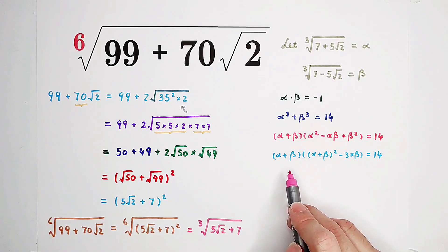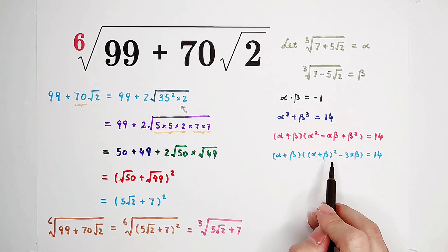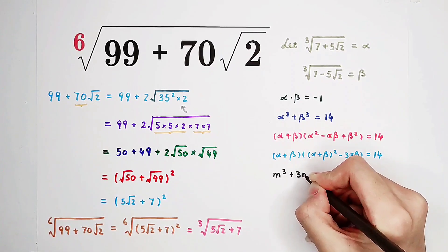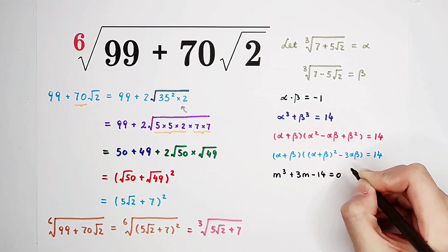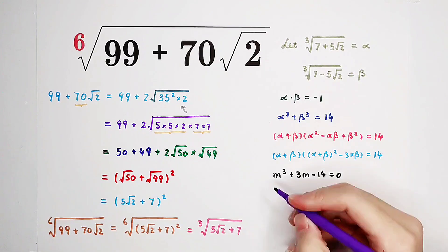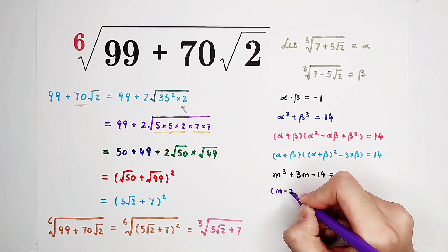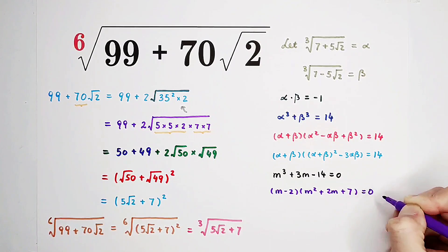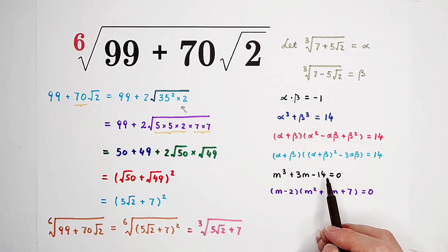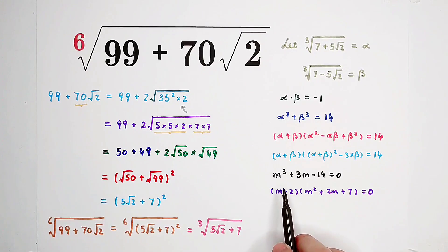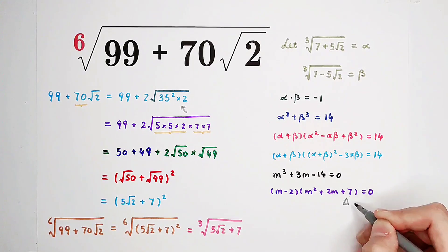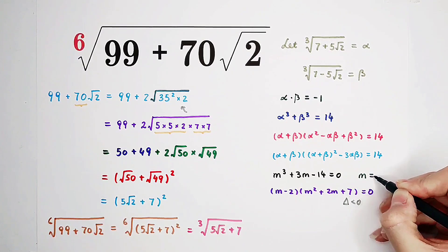Now, substitute m for alpha plus beta. So m times (m squared plus 3) equals 14. So m cubed plus 3m equals 14, then m cubed plus 3m minus 14 equals 0. Now, we can get the value of m by factorization. It is (m minus 2) times (m squared plus 2m plus 7) equals 0. Negative 14 can be written as negative 8 minus 6. So the left-hand side is m cubed minus 8 plus 3m minus 6. The factor (m minus 2) can be taken out. So m minus 2 equals 0, giving m equals 2. For the other factor, the discriminant delta is less than 0, so m equals 2 is the only real solution.